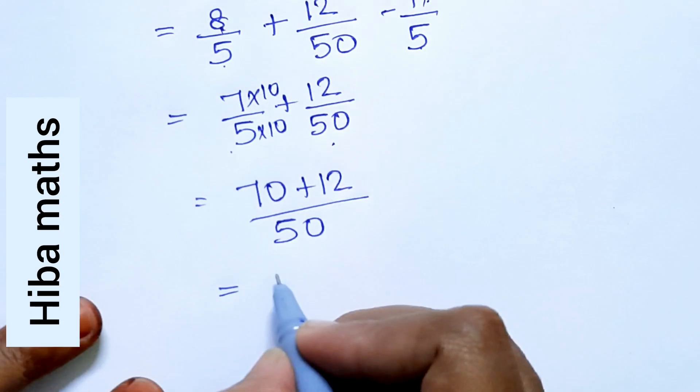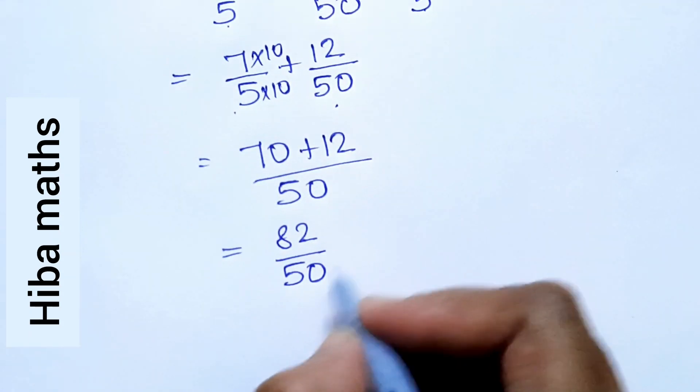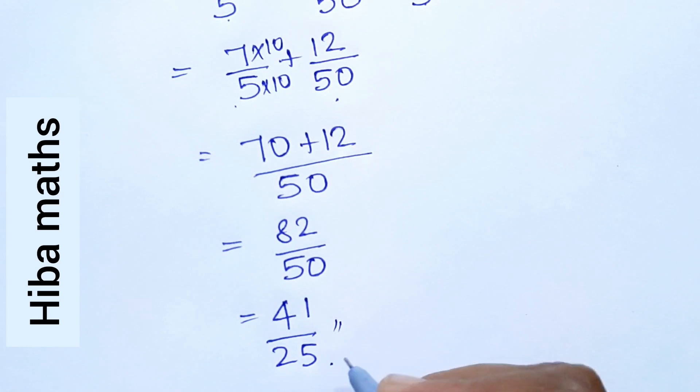So, 70 plus 12 is 82 by 50. And if we divide by two in both, we get 41 by 25. So, this is the answer.